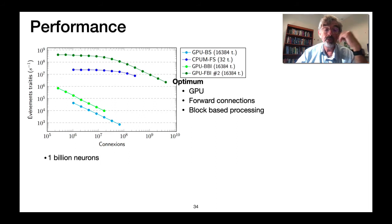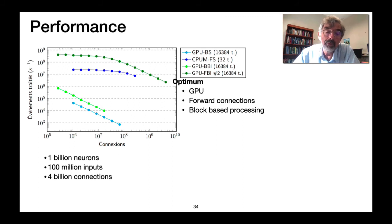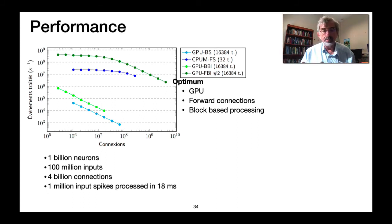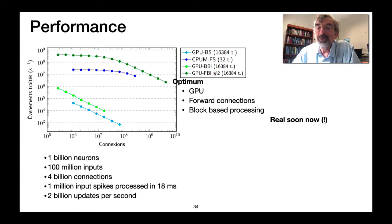Basically what we've looked at is the performance of this, and to cut a long story short what we found is that the optimum is using the GPU using forward connectivity and block-based processing. Specifically using just this GPU we managed to simulate a spiking neural network with a billion neurons, a hundred million input lines, four billion connections, let's say four connections per neuron. We take a block of one million input spikes, that's one percent of the inputs, and we push that through the GPU and process everything in 18 milliseconds. Find out which neurons have fired spikes and so on. That corresponds to 2 billion synaptic updates every second which is pretty impressive.